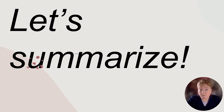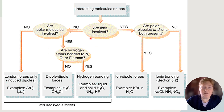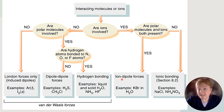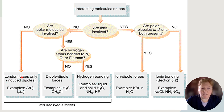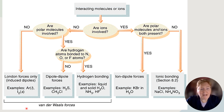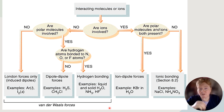Let's summarize with a flowchart. Are there ions? If yes, and there are also polar molecules present, it's a dipole-ion force like in an aqueous solution. If there are ions but no polar molecules, it's ionic bonding. If there are no ions — are there polar molecules? If no, it's London dispersion forces only. If yes, is it hydrogen bonded with nitrogen, oxygen, or fluorine? If yes, it's hydrogen bonding; if no, it's dipole-dipole. These are all called Van der Waals forces since they're covalent. Even stronger than all of these would be metallic bonding. That's intermolecular forces.